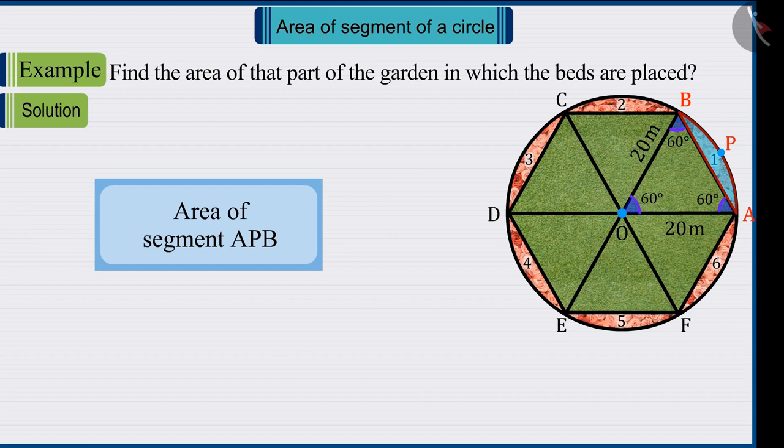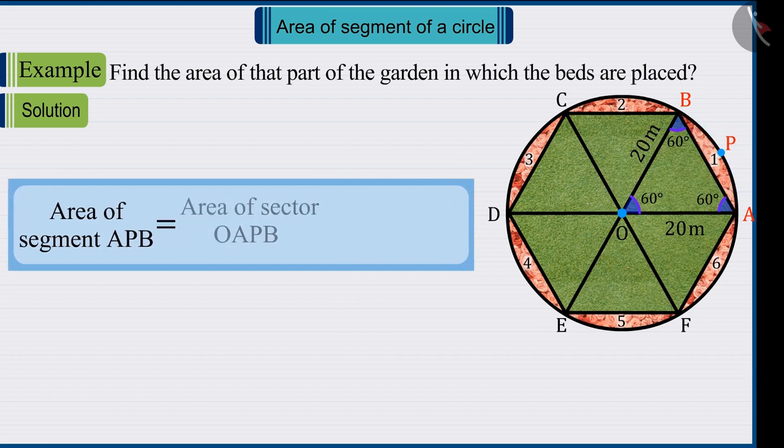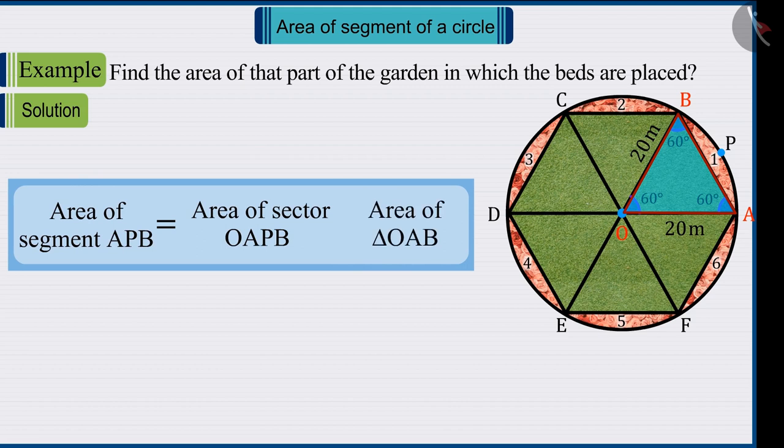Since we have to find the area of the segment, therefore from the area of sector OAPB, the area of equilateral triangle OAB will be subtracted.